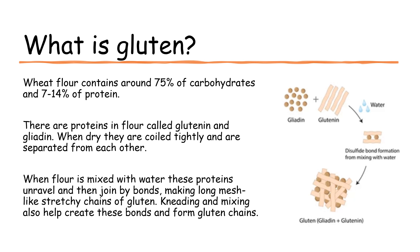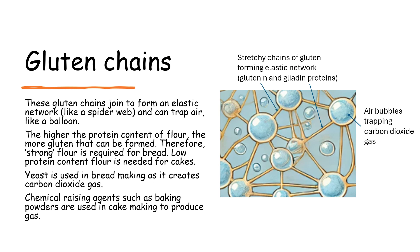Kneading and mixing also create these bonds and so form gluten chains. These gluten chains join up to form an elastic network like a spider web, and can trap air like a balloon.